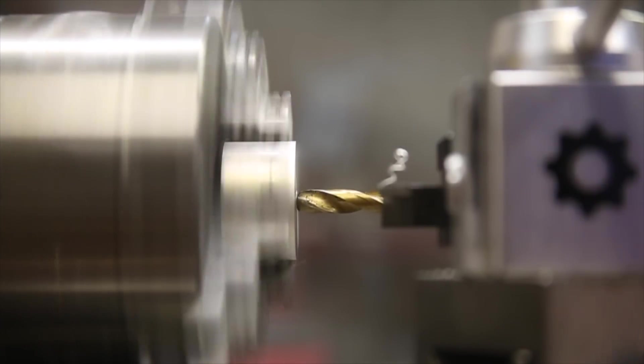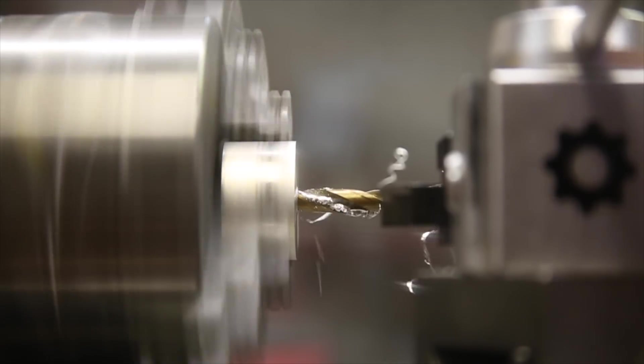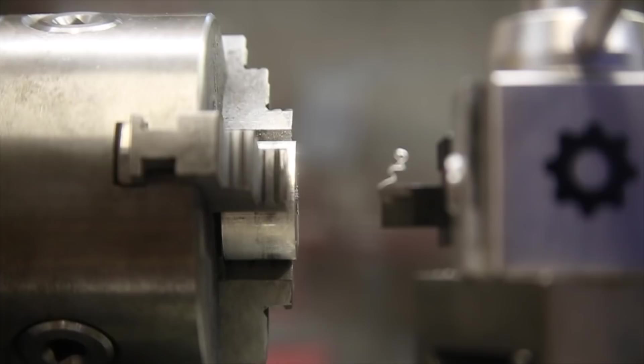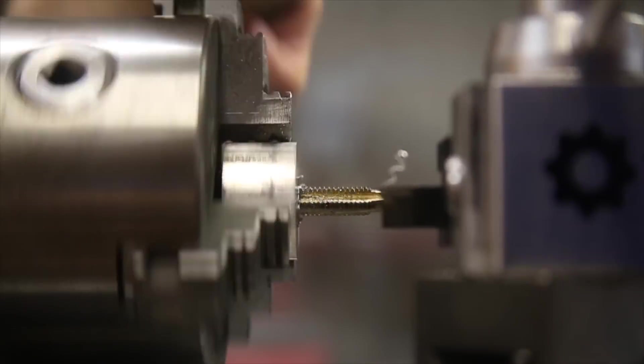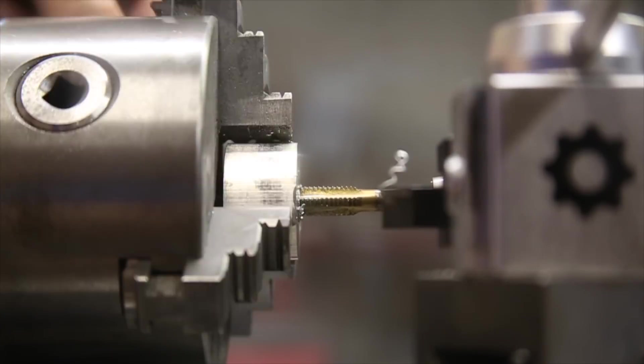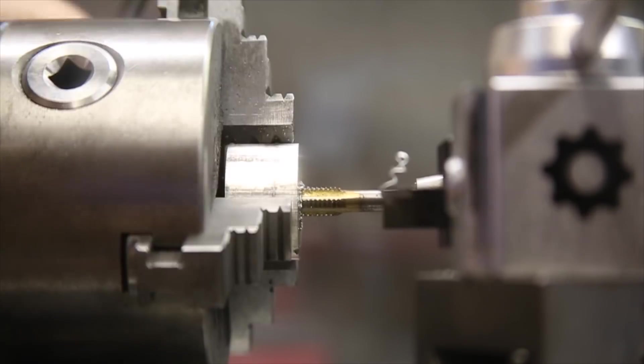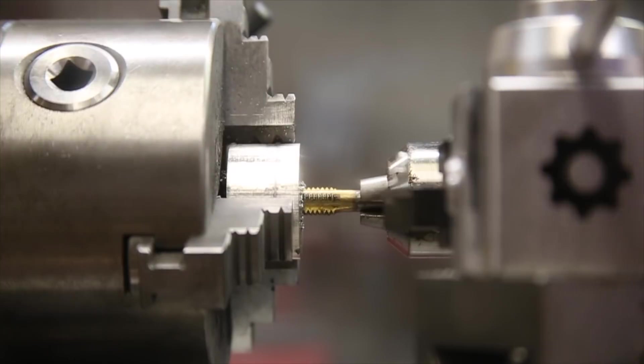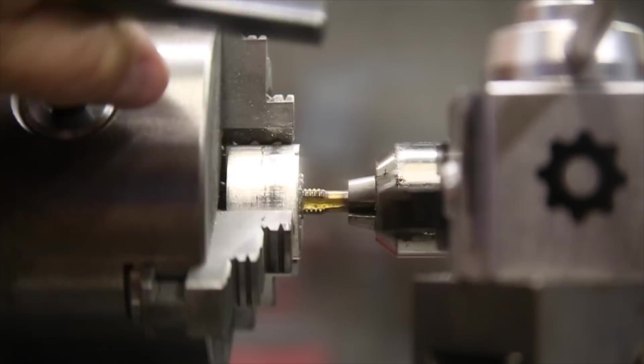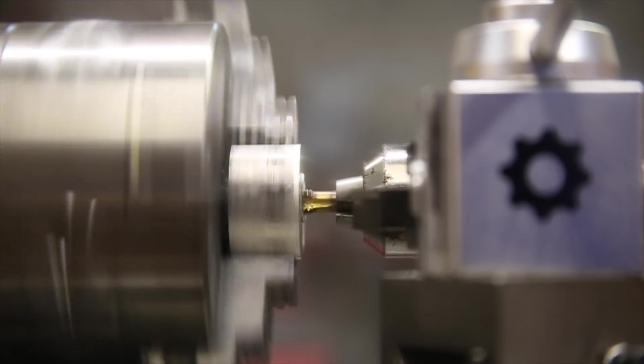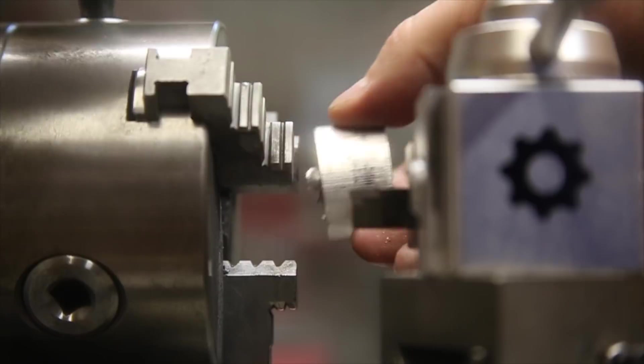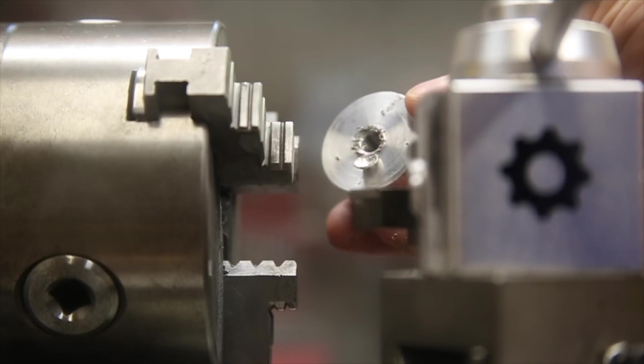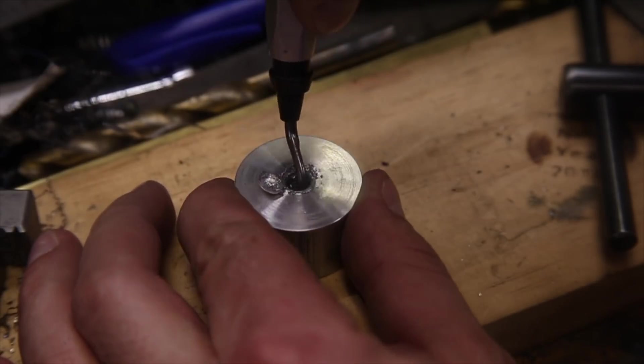Next, I'm drilling a through hole in the center of the part and tapping it with an M8 by 1.25 size thread. As a side note, I really do like this deburring tool.